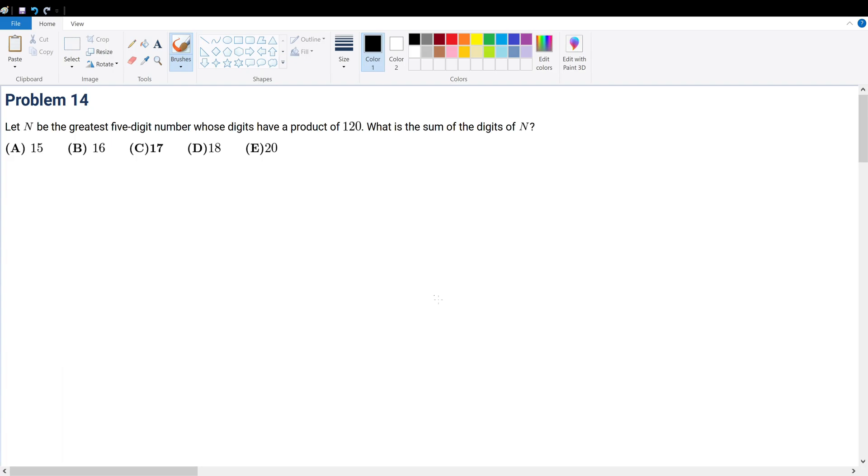Problem 14: Let N be the greatest five-digit number whose digits have a product of 120. What is the sum of the digits of N? So let's write down the five digits: one, two, three, four, five.